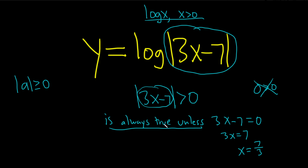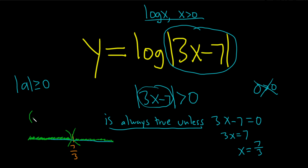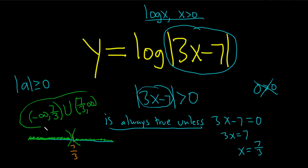So it's every number except 7 thirds. That means it's all numbers to the left of 7 thirds and all numbers to the right, but you don't include 7 thirds. You write the answer as negative infinity all the way to 7 thirds — not including it — then a union, then from 7 thirds to infinity. That's how you express the domain in interval notation.